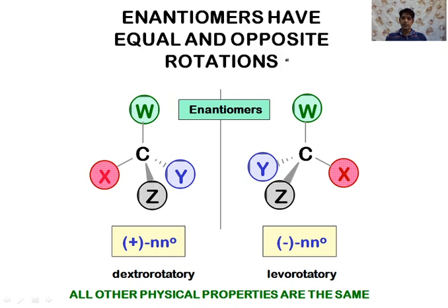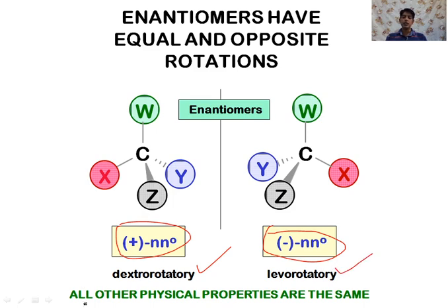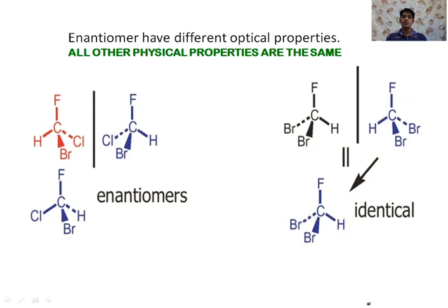An important property of enantiomers is that they have equal and opposite optical rotations. We can see +n degrees and −n degrees — the amount of optical rotation is the same but with different signs. If it is plus, we call it dextrorotatory; if it is minus, we call it levorotatory. All other physical properties of enantiomers are the same.